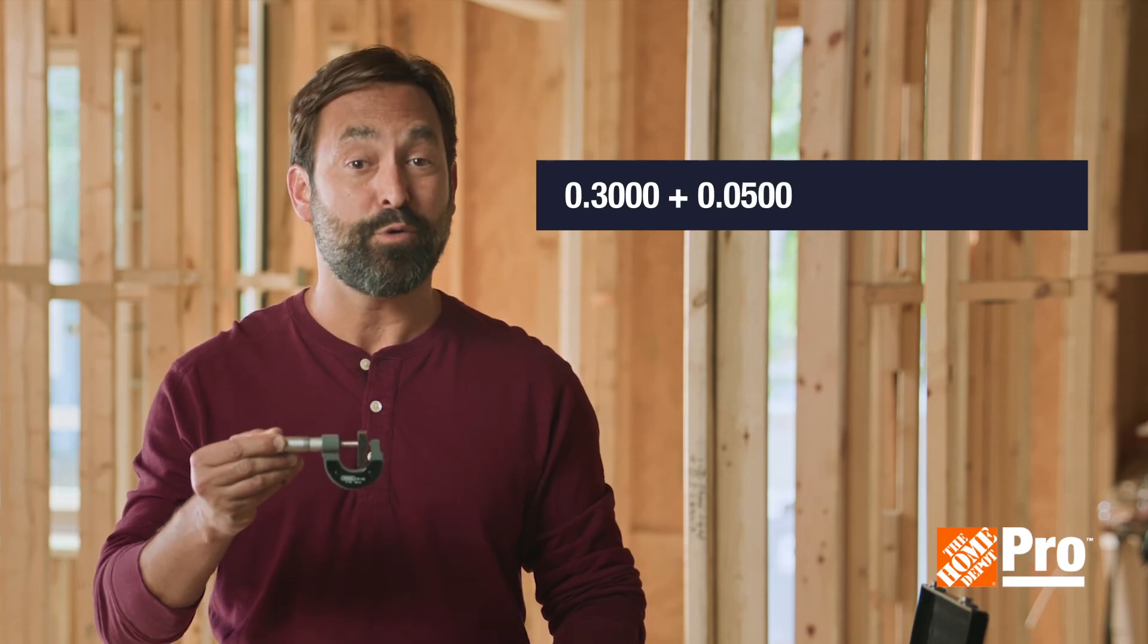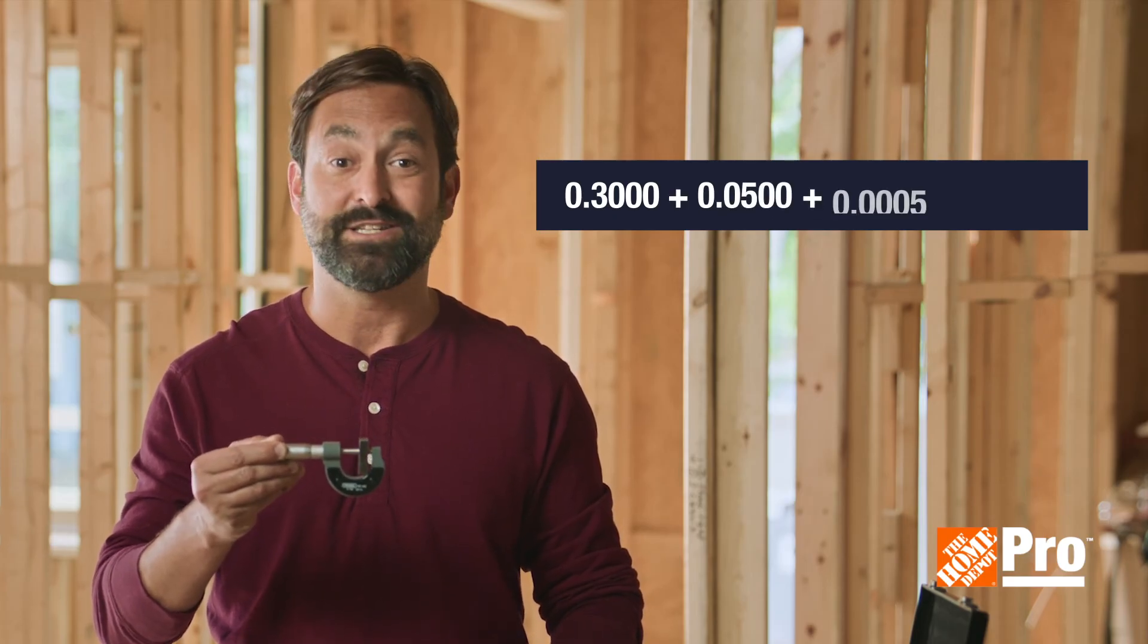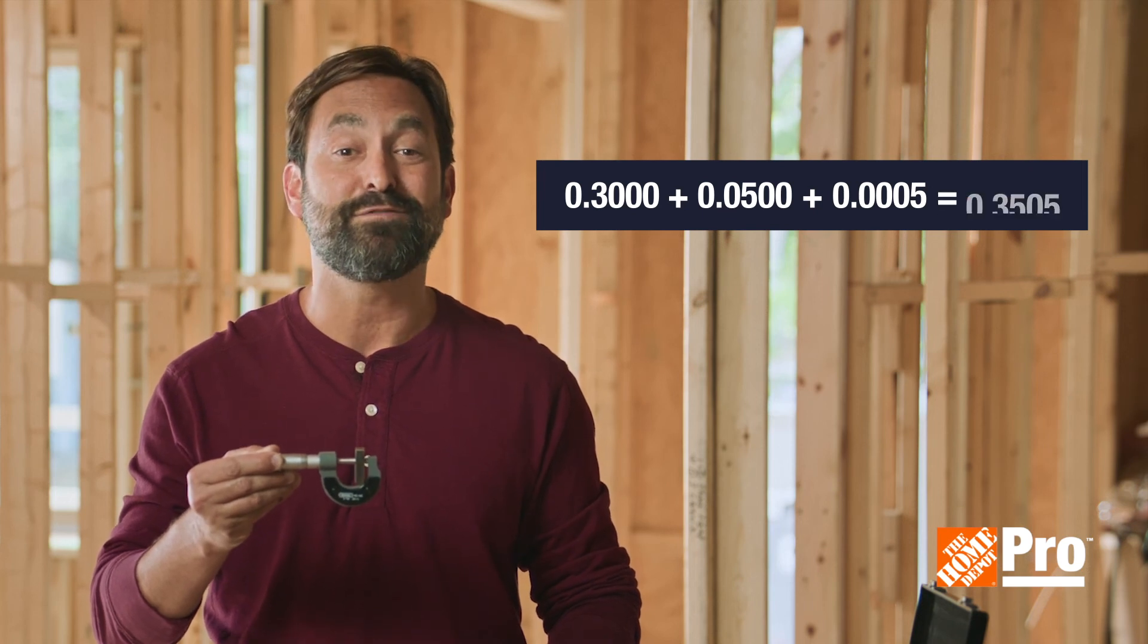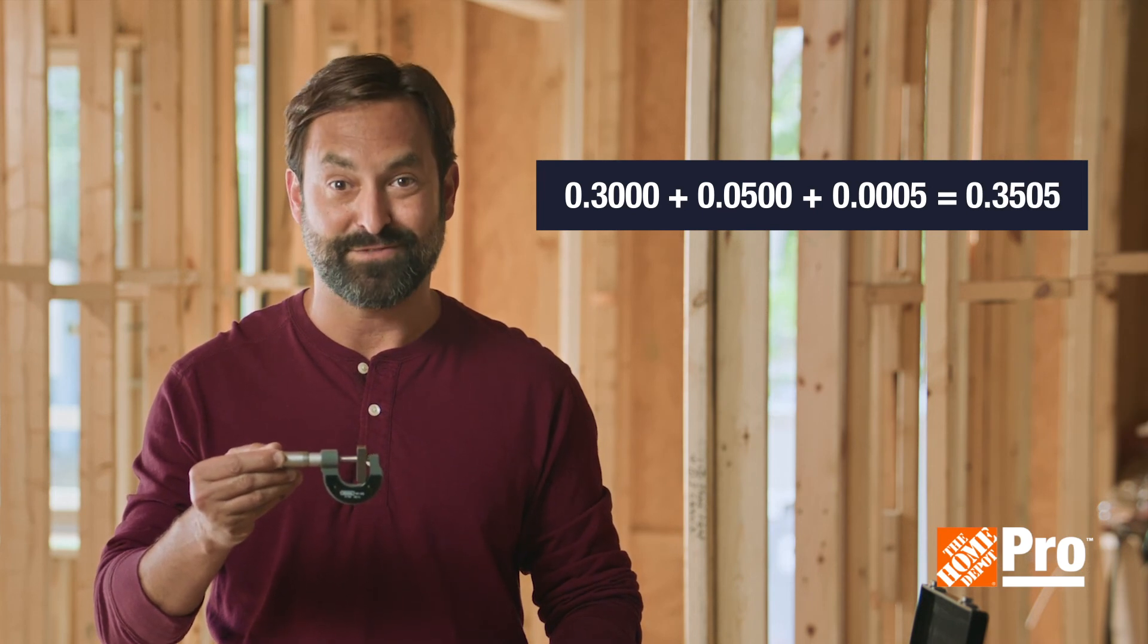Then you'll combine the numbers from the sleeve and the thimble to calculate the complete measurement. So we'll add together 0.3 plus 0.05 plus 0.0005 for a total measurement of 0.3505.